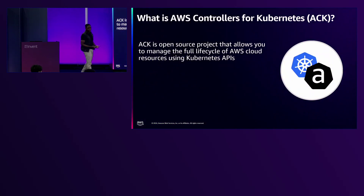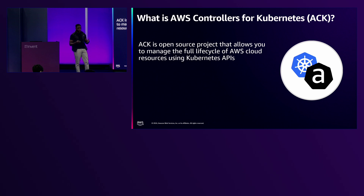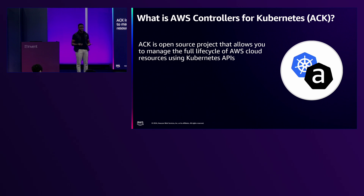For those of you completely new to it, ACK is an open source project that allows you to manage the full lifecycle of your AWS cloud resources using Kubernetes APIs, specifically based on the Kubernetes controller pattern. Controllers in Kubernetes are responsible for continuously watching both the live state and the desired state of your Kubernetes resources or infrastructure. When there is any divergence between those two states, it's the controller's job to reconcile them — making sure that live state always matches the desired state.